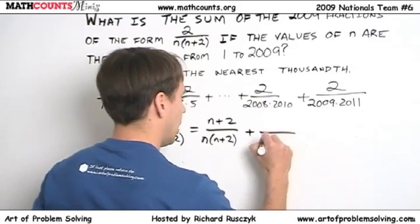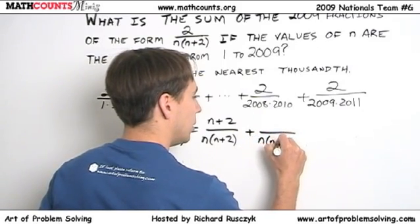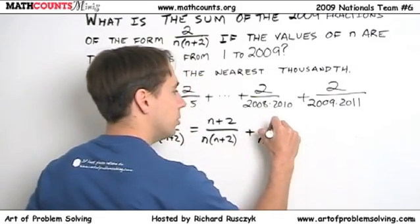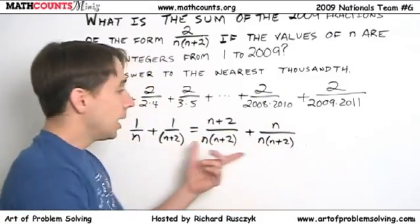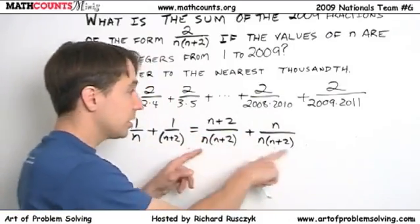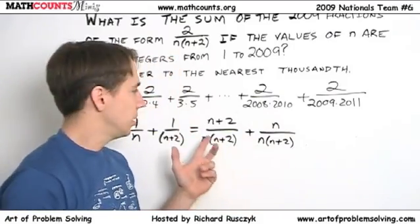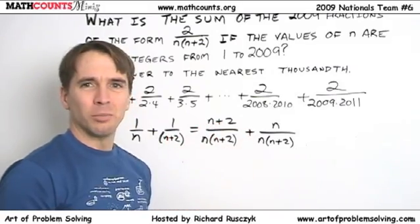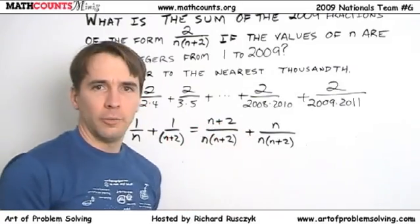And so we're going to write this with a common denominator, n times n plus 2, multiply the top and bottom of this by n, and we add these two together, we'll have the n times n plus 2 on the bottom. And on the top we'll have 2n plus 2, which is not very helpful.